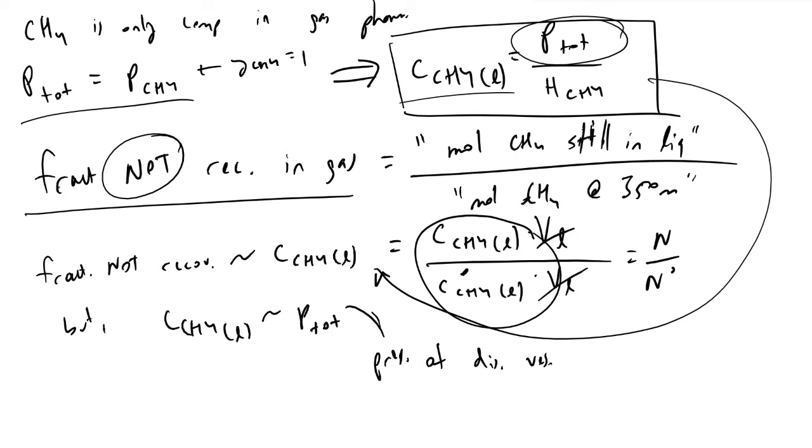And so what this means to a chemical engineer is that because we want to maximize the fraction recovered, we're going to want to operate the disengagement vessel at low pressures.